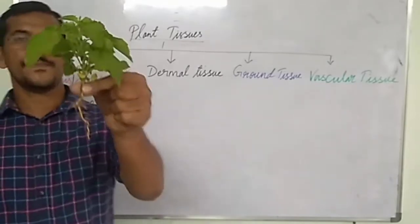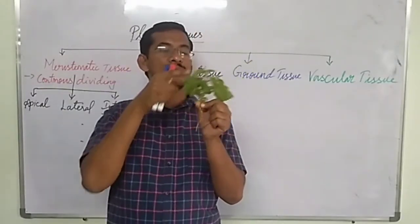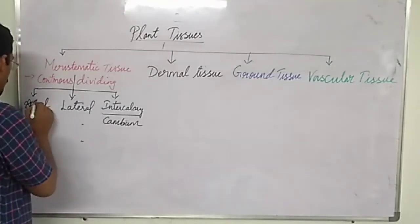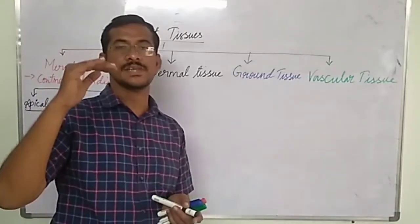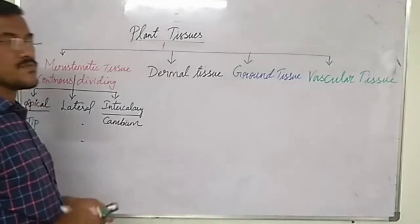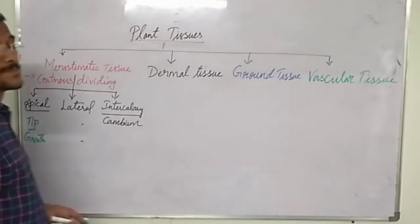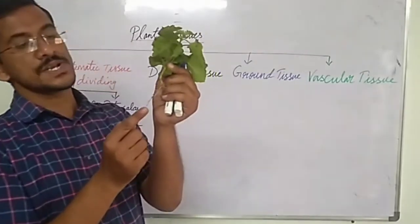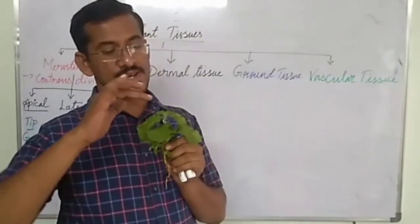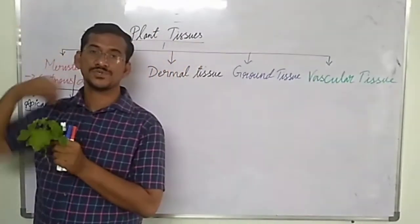Looking at a plant diagram: the tip of the root and the tip of the shoot is where apical meristematic tissue is present. 'Apical' means tip, so it is present on the tip of the root and tip of the shoot. Its function is to help in the growth of the root and shoot.